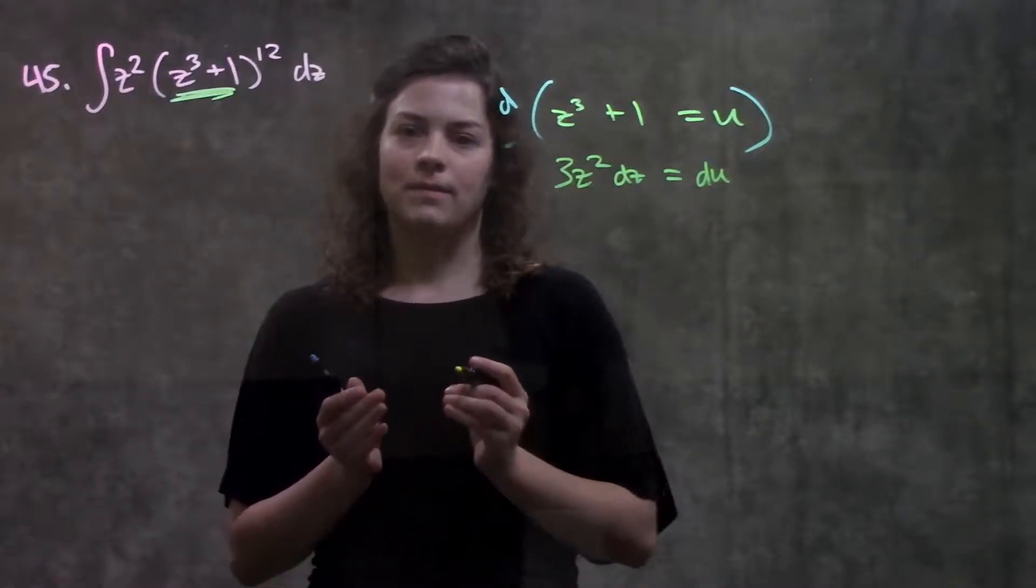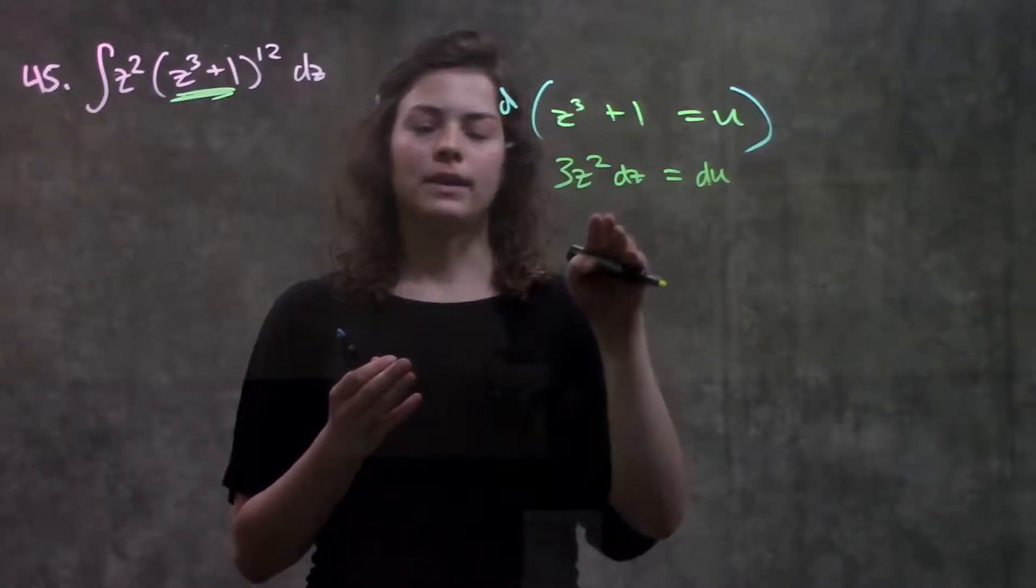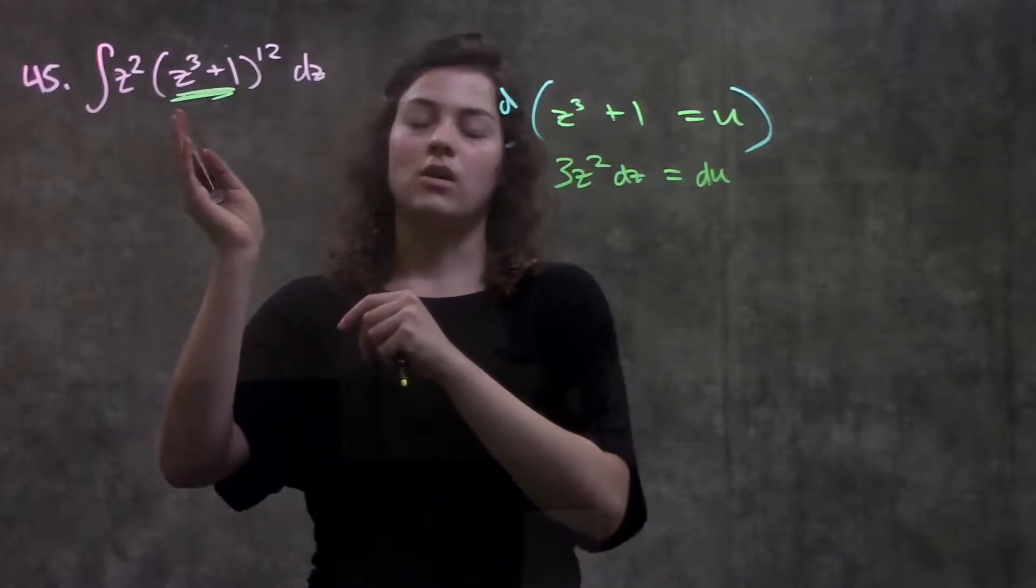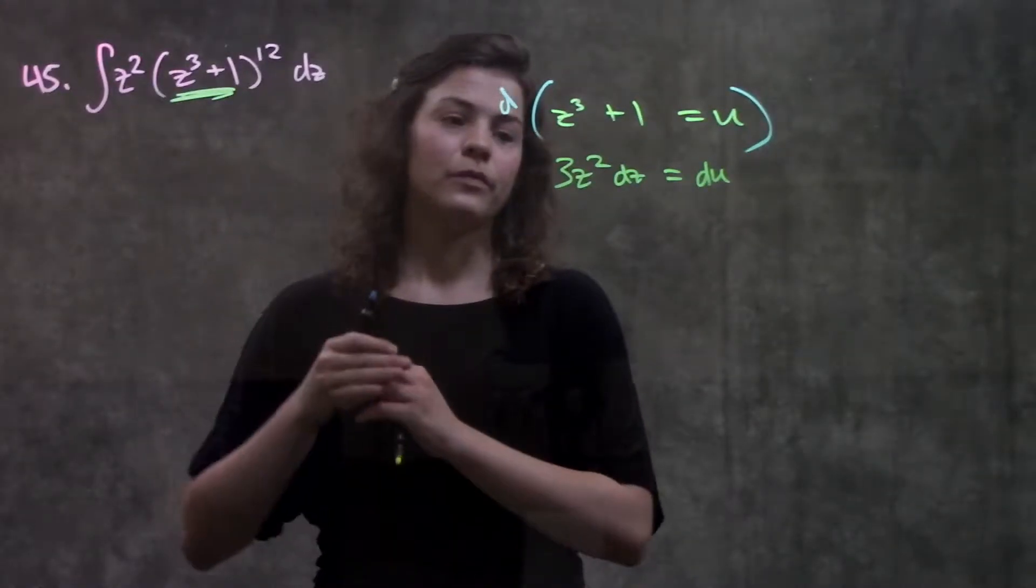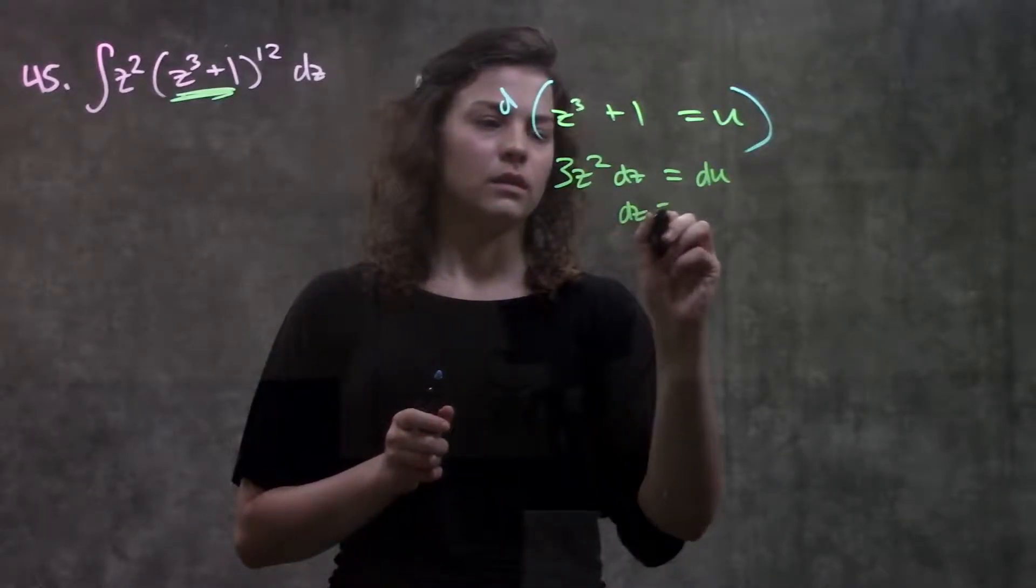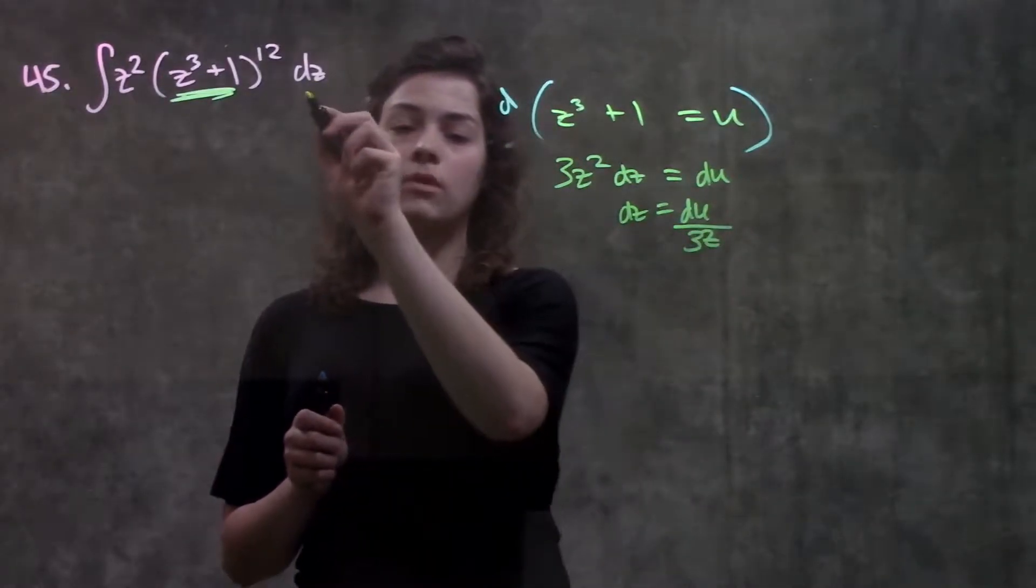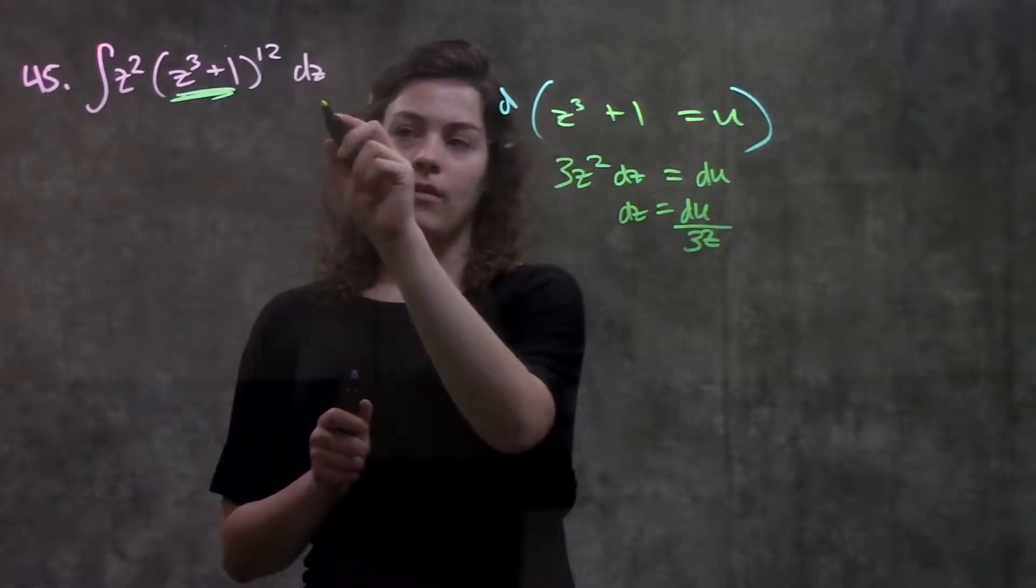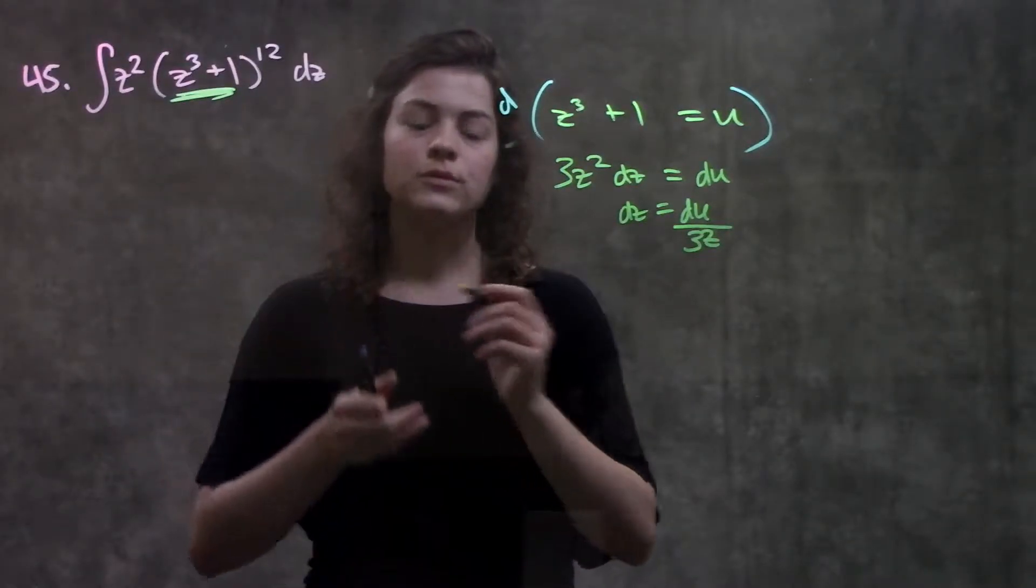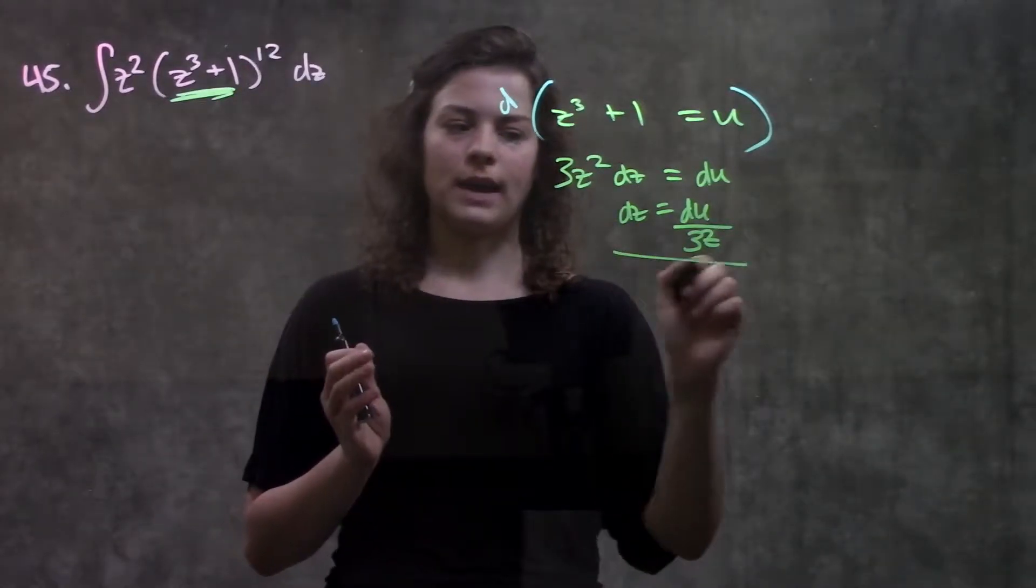Okay, next thing that you want to think about is, so for u-sub, we want whatever we have here to cancel out with what's left in the function, right? Because we want to rewrite this all in terms of just u's. So what I'm going to do is, I'm going to solve for dz here, dz equal to du over 3z squared. I'm going to plug this value in for my dz. And remember, when I plug this in for my dz, I should have things cancel out so that I have this entire function written in terms of only u. So let's see if that happens.